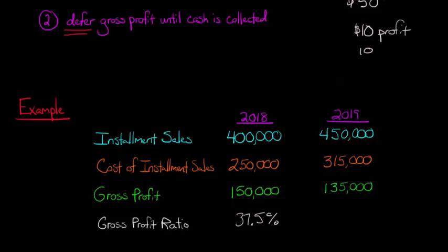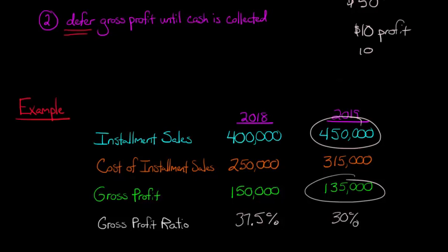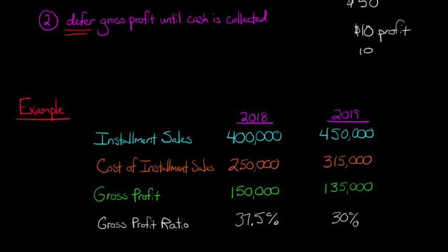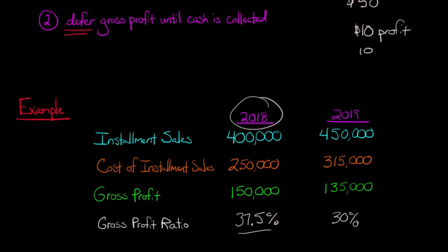For 2019, the 30% comes from taking $135,000 and dividing it by $450,000. Notice it's different for each year — both 2018 and 2019 have different gross profit ratios, and we're going to account for things differently.